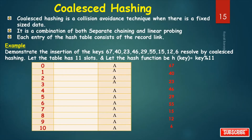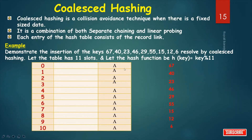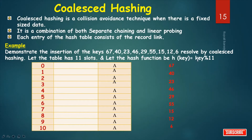Another type of hashing is coalesce hashing. Coalesce hashing is a collision avoidance technique used when there is fixed-size data. It is a combination of both separate chaining and linear probing. Each entry of the hash table consists of the record length. Let's take an example: we demonstrate the insertion of keys into a table with 11 slots (0 to 10), with hash function h(key) = key mod 11.